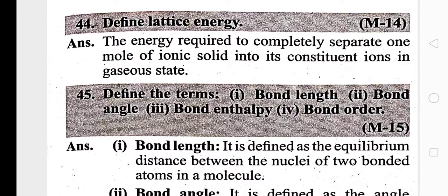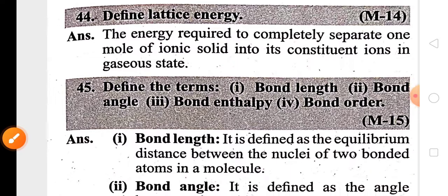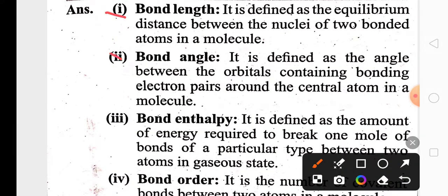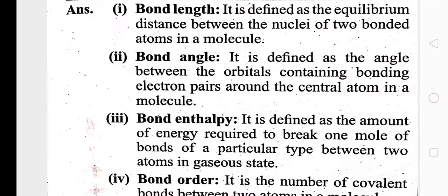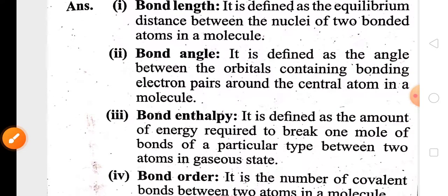Lattice energy is an important definition for one mark. It is the energy required to separate the cations and anions present in an ionic solid. In bond parameters, the definitions of bond length, bond angle, bond enthalpy, and bond order are each important for one mark.